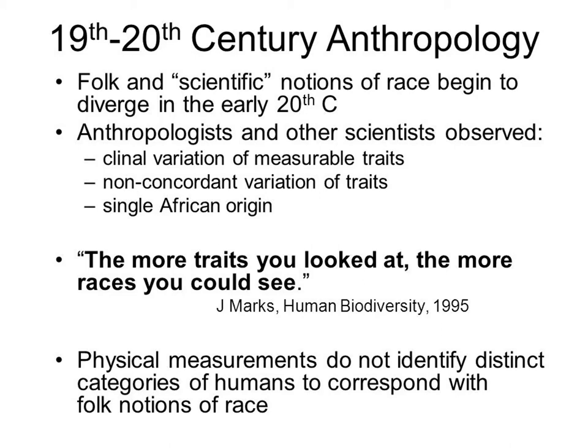We also see non-concordant variation of traits, which means there is a wide degree of variation in any single given trait within our species, and there are no set of traits that are exclusively unique to any given human group. Based on more recent genetic information, we know there is a single African origin for the human species. Jonathan Marks, a human biodiversity professor, says that the more traits you looked at, the more races you could see — meaning you are the one really determining what the different racial categories are.